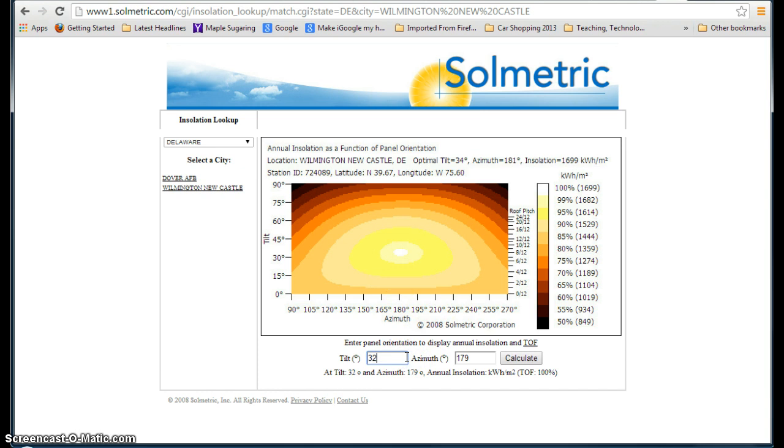The more accurate way to do it is just to go down here. So you can enter in your tilt and azimuth, and you can see right now it starts as a default at the optimal or near optimal tilt, and then the optimal azimuth. So you see, we do have some flexibility. You can be down to 32 degrees tilt and 179 degree azimuth, and you're still, down here is your tilt and orientation factor of 100%.